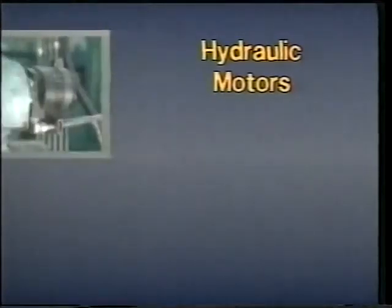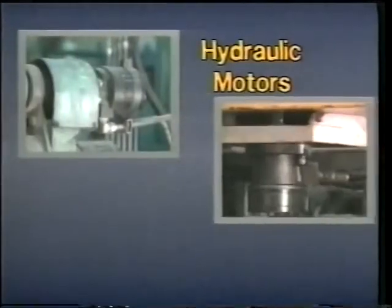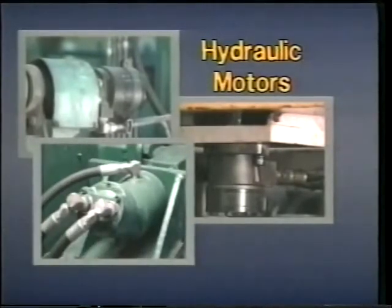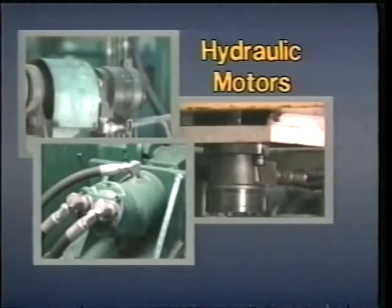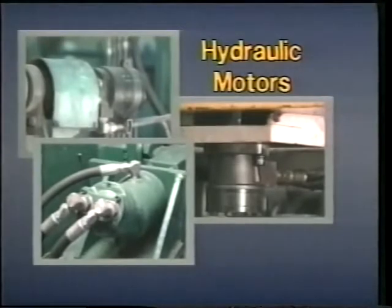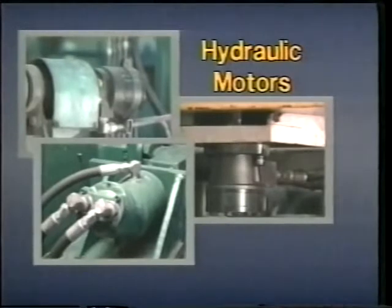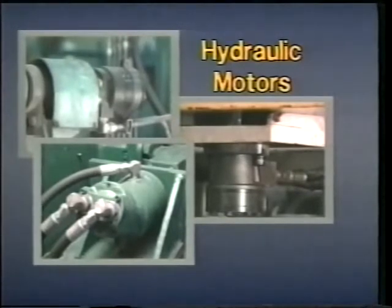Three types of motors are commonly used in industrial hydraulic systems: the vane motor, the gear motor, and the piston motor. While each of these motors looks similar to its counterpart pump, each operates on a principle exactly opposite of the pump. Hydraulic motors take fluid under pressure, apply it to the surface area of an internal moving part to create a rotary force, and then return the fluid to tank.